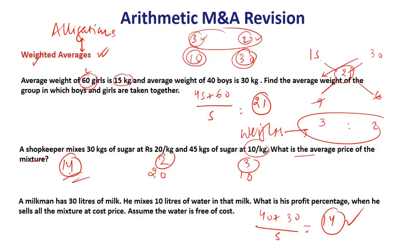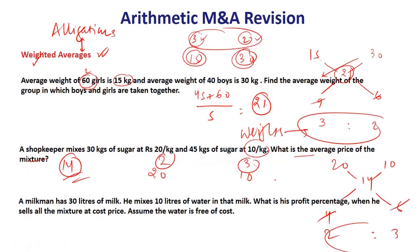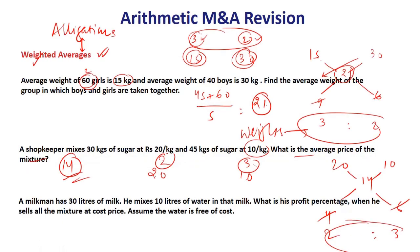Now let's use allegations. We have 20 and 10, and the final average is 14. Taking the difference along each line: 14 minus 10 is 4, and 20 minus 14 is 6. Always take the positive difference. So the ratio is 2 is to 3 — the same ratio as before. Weighted average and allegations are effectively inverse applications of each other.